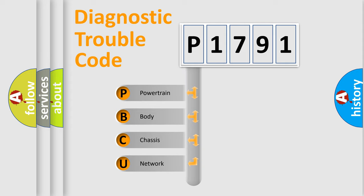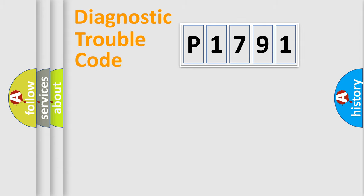We divide the electric system of automobile into four basic units: powertrain, body, chassis, and network.